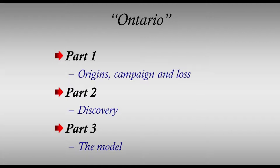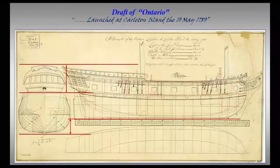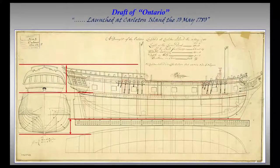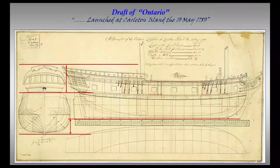I obtained a copy of the draft of Ontario held in the National Maritime Museum, then stored in Greenwich. In my enthusiasm for making as accurate a model as possible and true to the style of models in Greenwich, a study of the draft revealed a major question. The body plan appears to be larger than the sheer plan, and neither plan is exactly to the given dimensions.